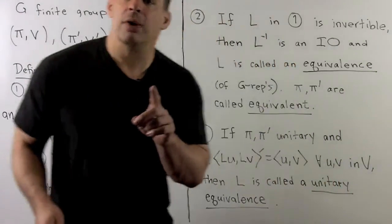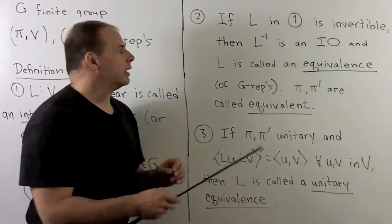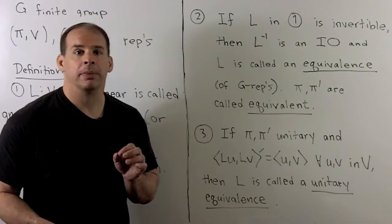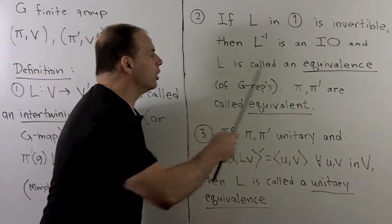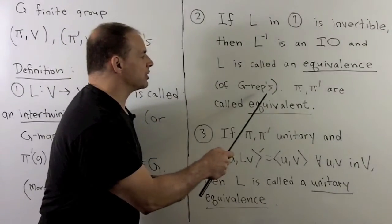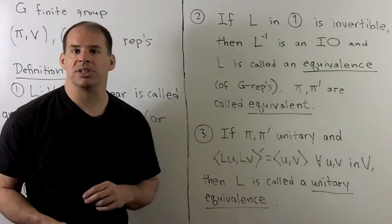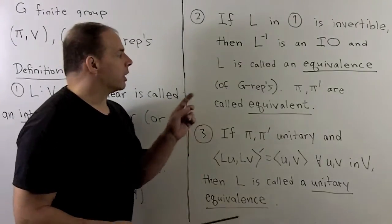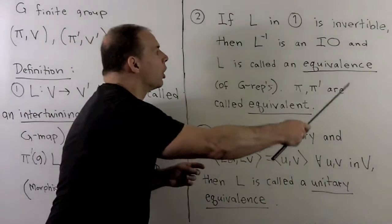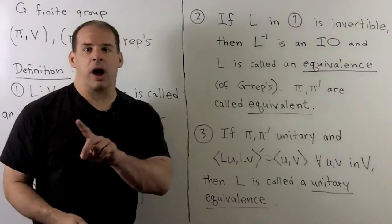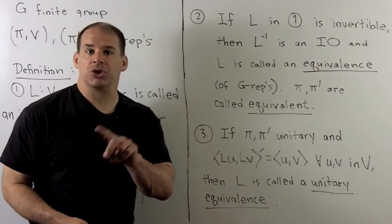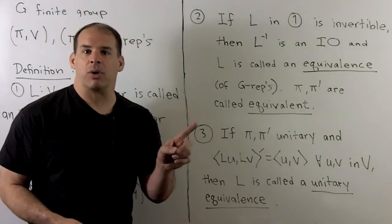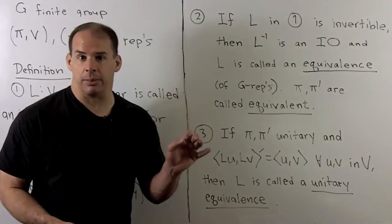Now, if our map L is invertible, then we can show that L inverse is also an intertwining operator, and we call L an equivalence of G-representations. In this case, we would say that pi and pi prime are equivalent. This is going to be what we use to say whether two representations are equal or not. If we can find an equivalence, then they're the same representation, just with different labels.